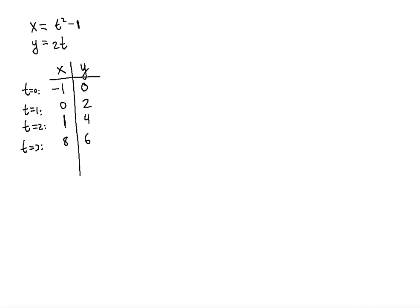So let's actually plot this in the xy plane. Let's plot those points. So we will need 8 ticks for the x: 3, 4, 5, 6, 7, 8. We will need a negative 1 here, and then 2, 3, 4, 5, 6 for the y-axis.